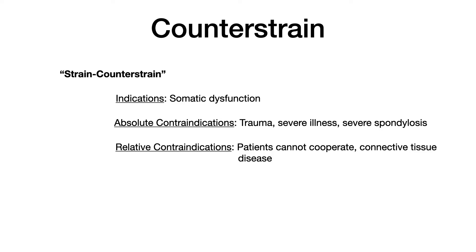The indications for counterstrain — the only one you need to be concerned with is somatic dysfunction, and this is pretty obvious even if you don't realize it. On Comlex, if they give you a patient with a tender point, by definition the presence of that tender point means somatic dysfunction. The absolute contraindications include trauma, especially recent trauma to the affected area, severe illness, or severe spondylosis. Relative contraindications include the patient being unable to cooperate or the presence of connective tissue disease.